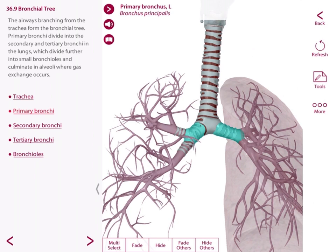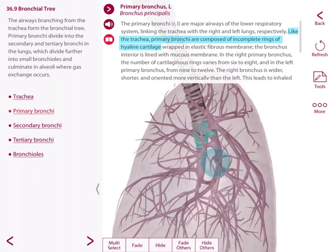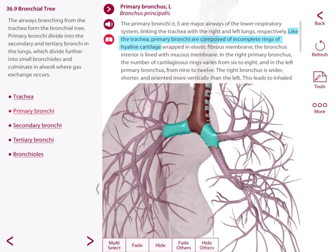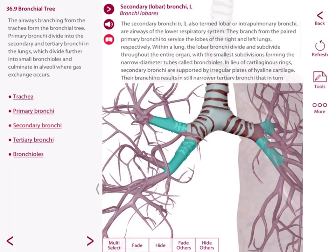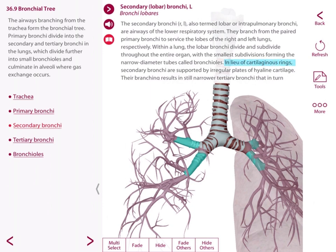I need you to see the structural differences here between these many diverging bronchi, so it's important to read through your book tab as we do so. You'll see here that like the trachea, the primary bronchi are composed of incomplete rings of hyaline cartilage. However, you will see that they are slightly more narrow than the trachea. As you see them branch into what are known as secondary bronchi, you see that these begin to get even smaller than the primary bronchi, and instead of cartilaginous rings, the secondary bronchi are supported by irregular plates of hyaline cartilage.